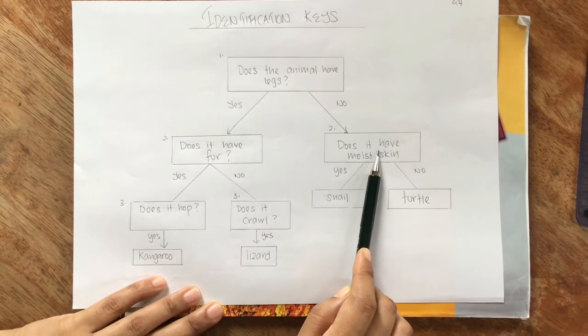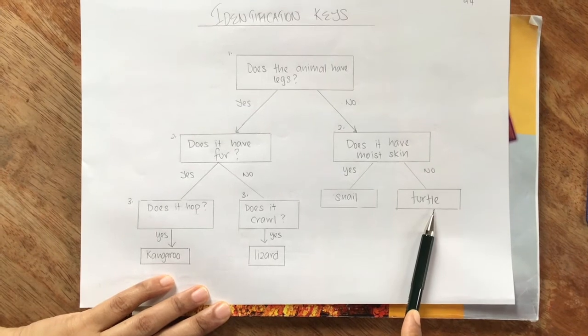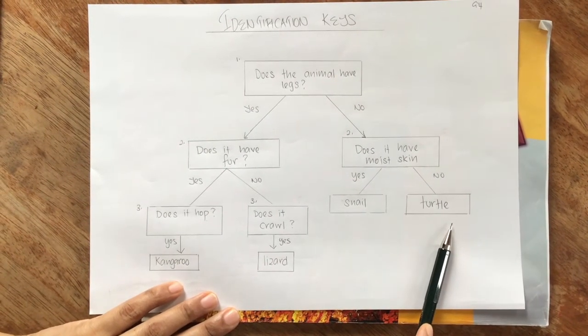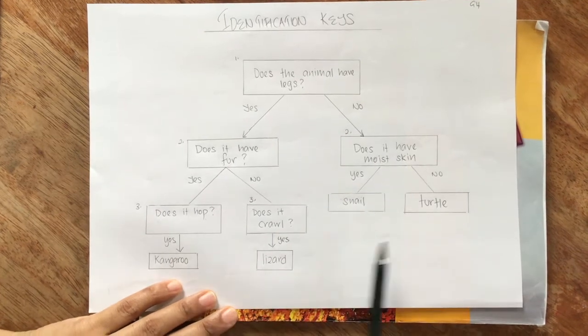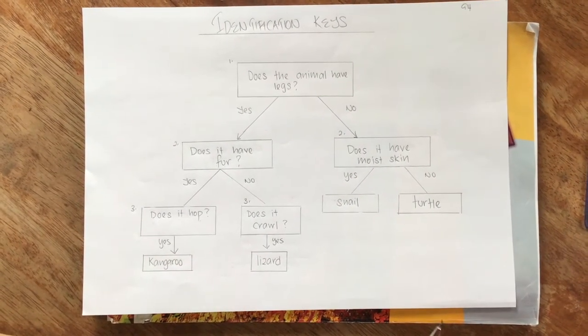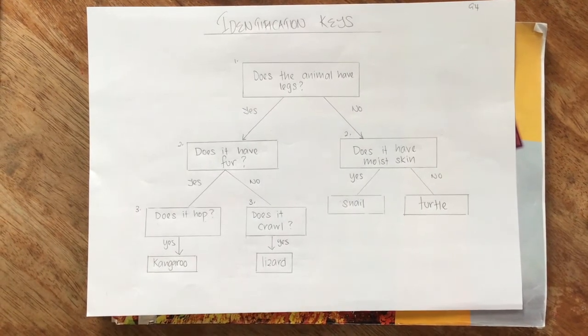So the animal that has got moist skin is snail. Animal that does not have moist skin are turtles. So that's my answer. This is how you fill up a series of questions with yes and no and ask more questions to come. Was that easy children?